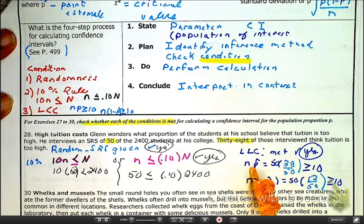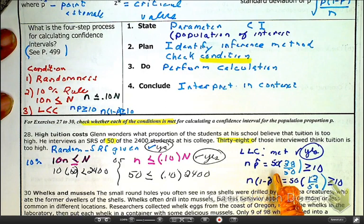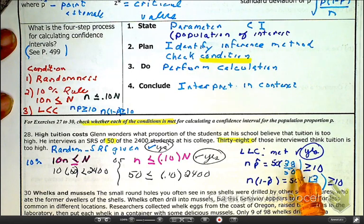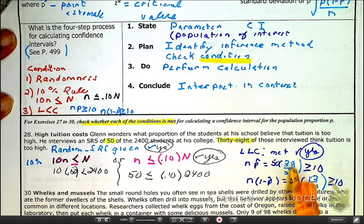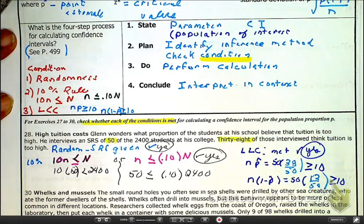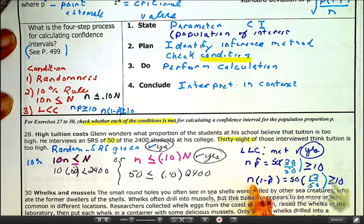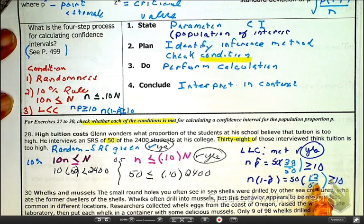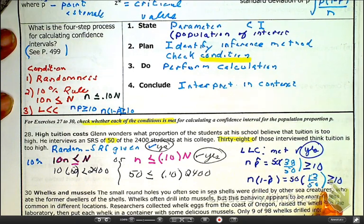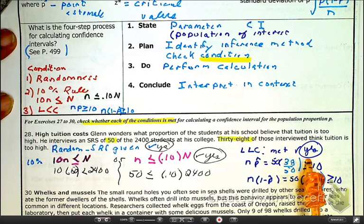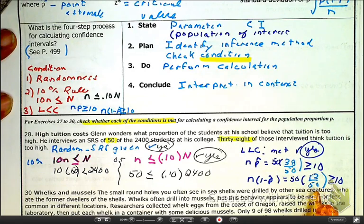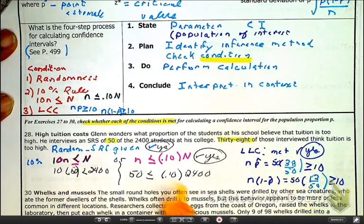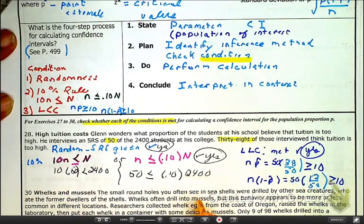So, here we have 50, and then your success here is going to, the probability of success is 38 over 50. And then we're looking here at N, the sample size, which is 50, times the probability of failure. Both of those are greater than or equal to 10, so, therefore, yes, the conditions for large count has been met. All the conditions here have been met, so, yes, we could proceed with any test that they want us to do.